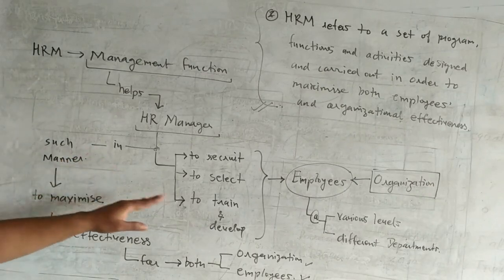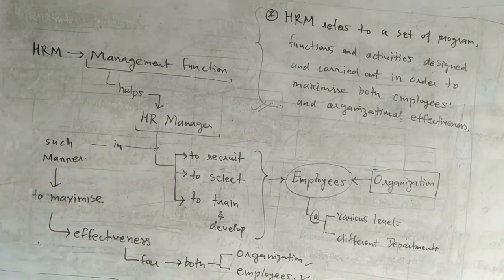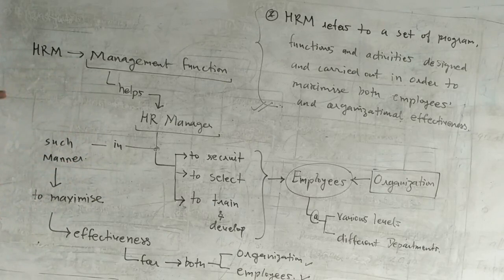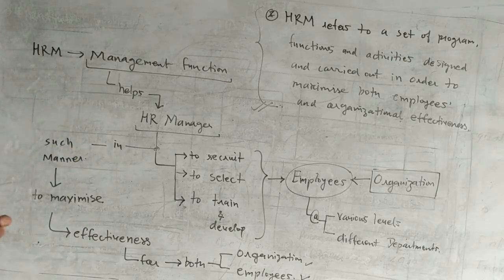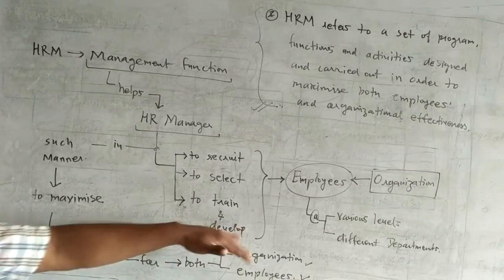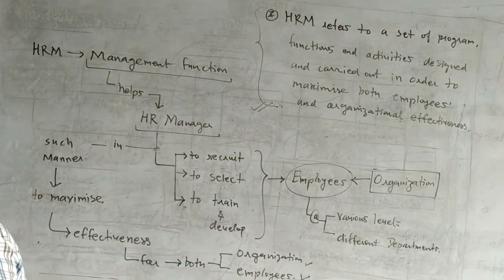The HR manager has to train them so that they are ready to contribute to the organization. So basically, human resource management is a management function which helps the HR manager to recruit, select, train, and develop employees of the organization. These employees could be serving at various levels and in different departments.